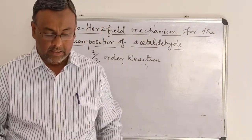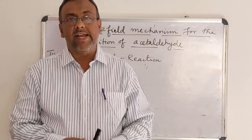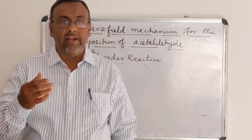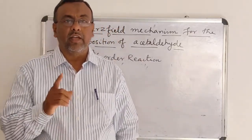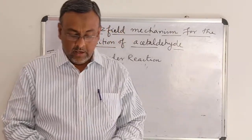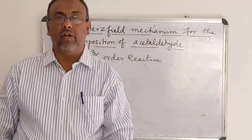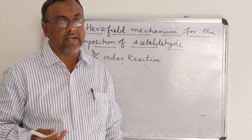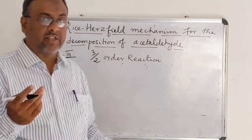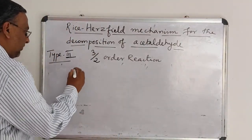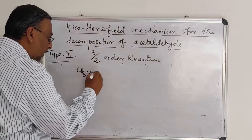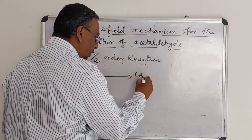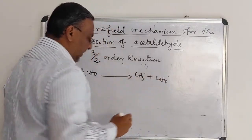In this type of reaction, the chain initiation reaction will be first order and the chain propagation and chain termination follow second order. The thermal decomposition of acetaldehyde also follows one-and-a-half order or three-by-two order. The reaction scheme can be written as: first, acetaldehyde decomposes to give a methyl radical and an acyl radical.